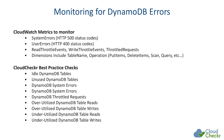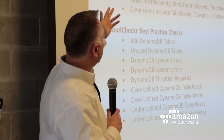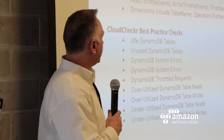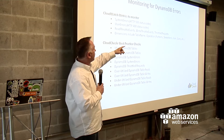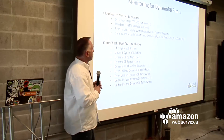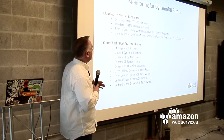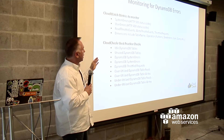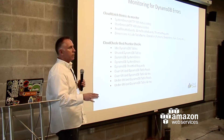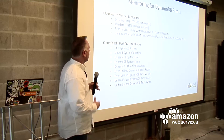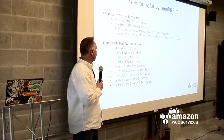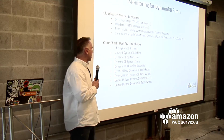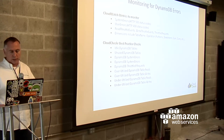You also want to monitor DynamoDB for errors. The things to monitor are system errors and user errors — a system error is on the system side, a user error is doing something wrong on the user side. Then there are read throttle events, write throttle events, and throttle requests. There's not quite a one-to-one correlation between those, so don't get confused. You can read those events over different dimensions like the table or the operation to really dig in and see where throttle requests are happening. CloudChecker has best practice checks that will look at your environment and highlight where you have idle or unused resources, system errors, throttle requests, and user errors.